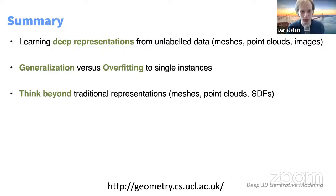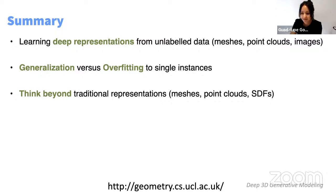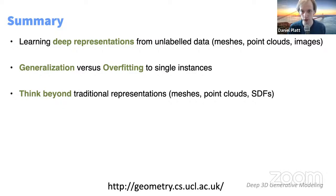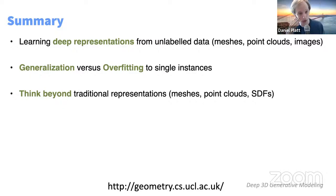Thank you very much. That was brilliant. We have a few minutes for questions. The first question is: does the 2D parameterization need to have specific properties — for example, be a conformal map — when used for neural surfaces?